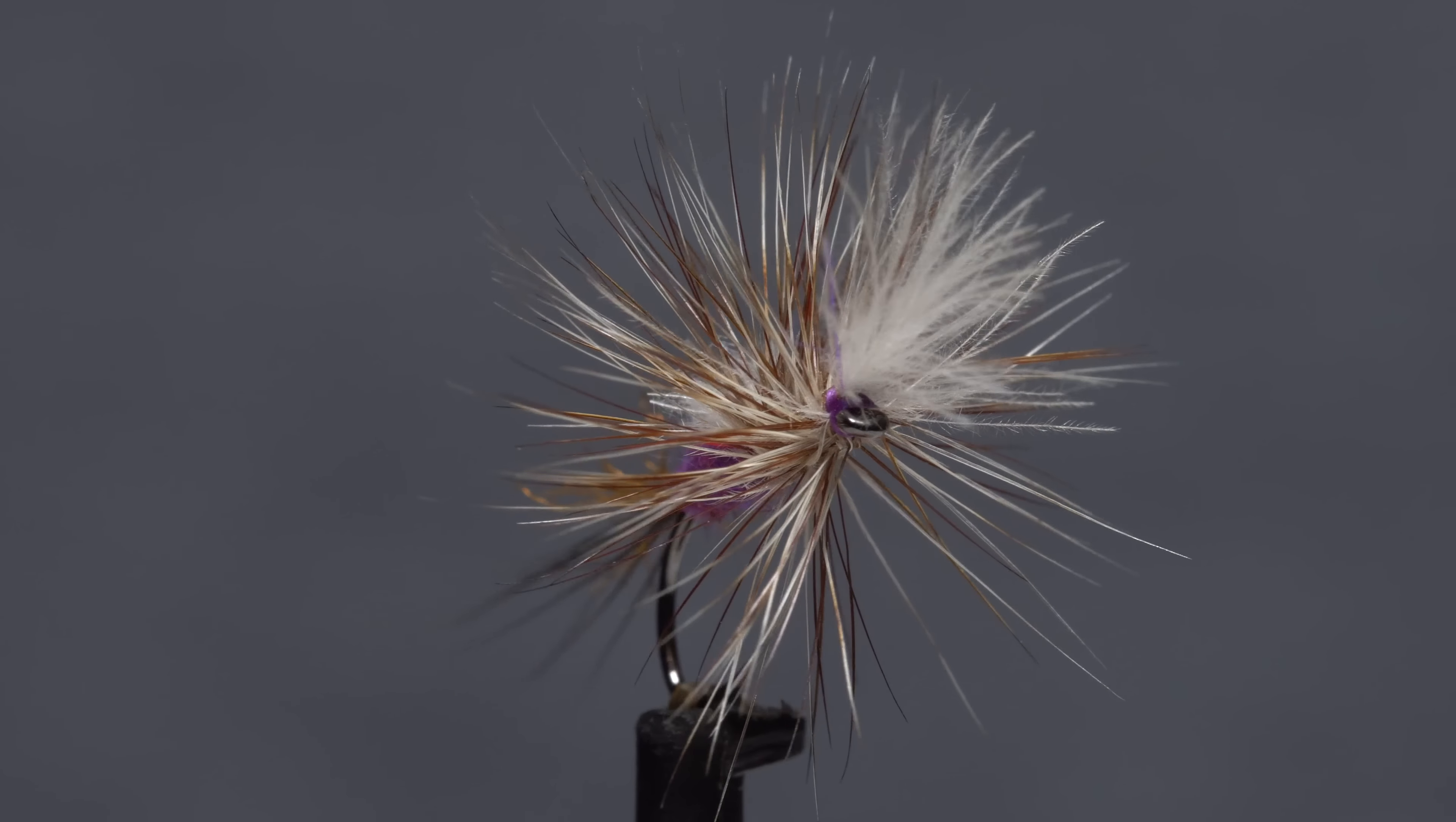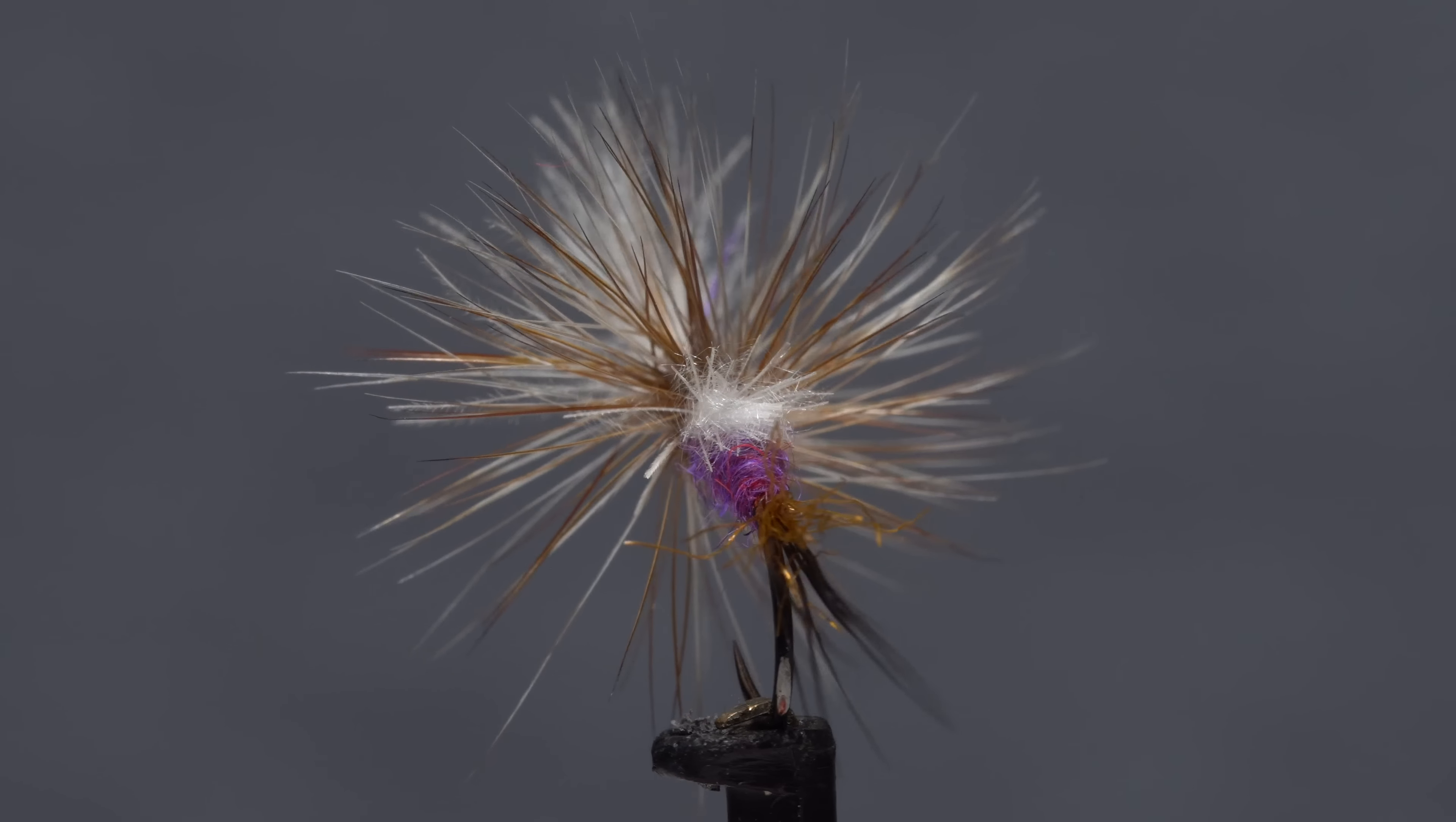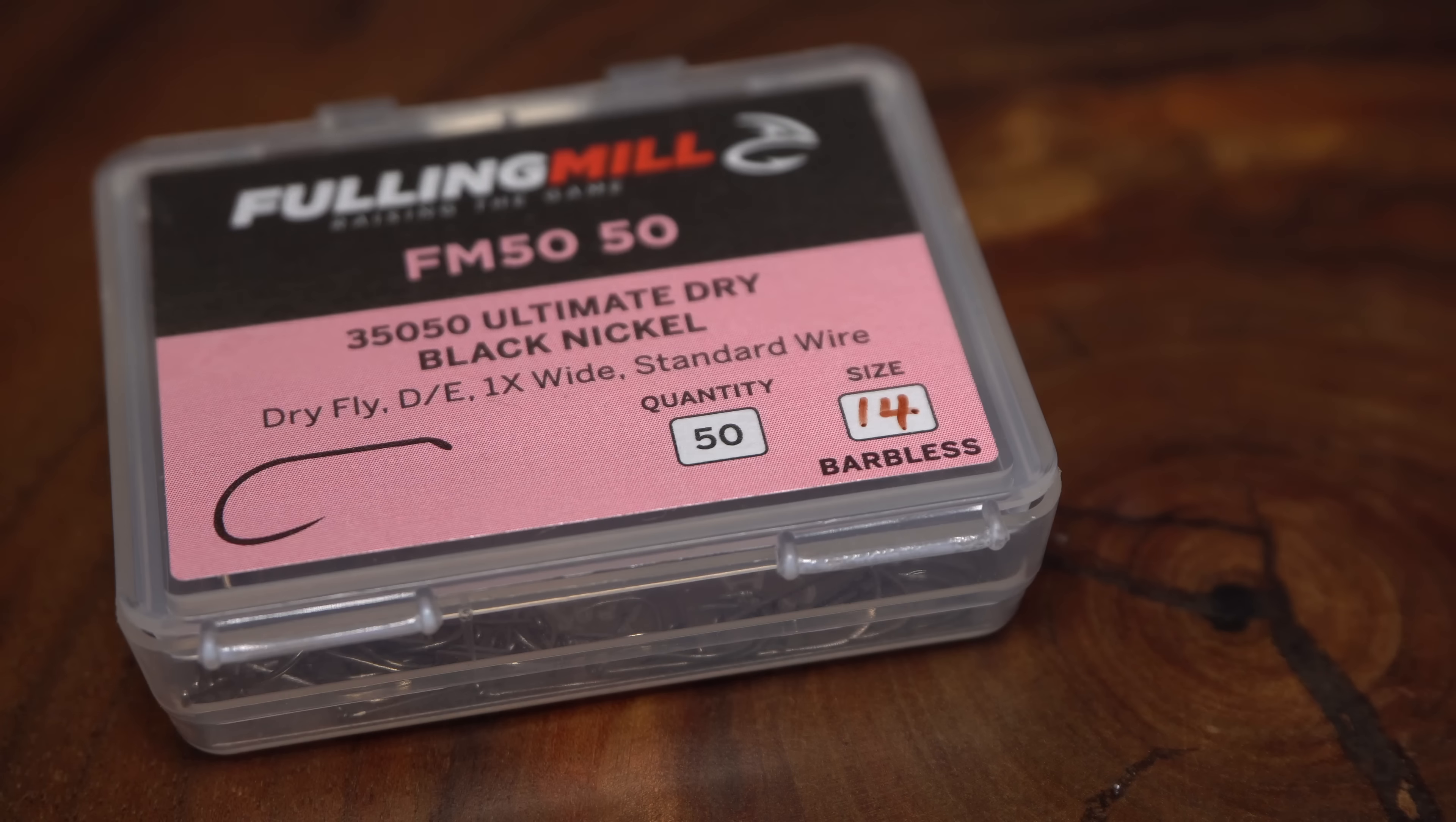This rather unkempt looking fly is a mashup of two of my favorite patterns, the Last Chance Cripple and Andy Carlson's Purple Haze. I've yet to find a hatch where it doesn't work. For a hook, I'm going to use a Fulling Mill Ultimate Dry in size 14.